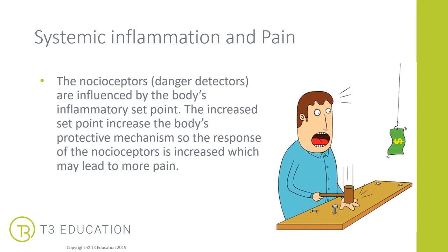The nociceptors — the danger detectors — are highly influenced by the body's inflammatory set point. If the set point has been increased, so there are more pro-inflammatory molecules being released and the body's protective mechanism has increased, then the amount of nociceptors is also increased. This may potentially lead to somebody experiencing more pain if their system is inflamed. Things like nutrition, stress, smoking, and taking lots of medication can all impact how someone perceives pain, regardless of whether they've experienced an injury or not. We really want to focus on your client's whole well-being, and not just a particular injury.